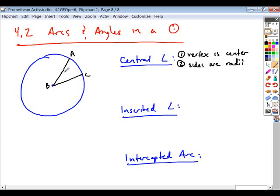So in this case, the central angle is angle ABC. The vertex is the center, the sides are radii.